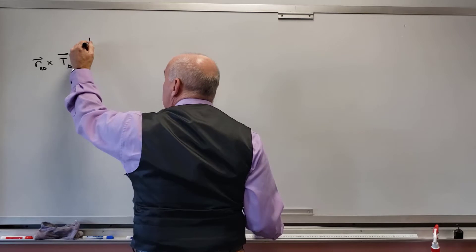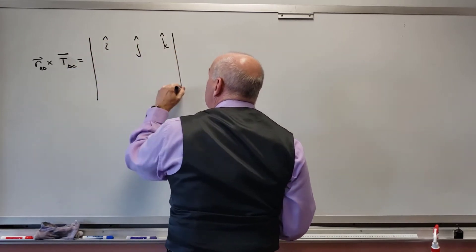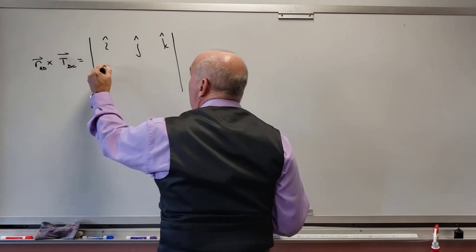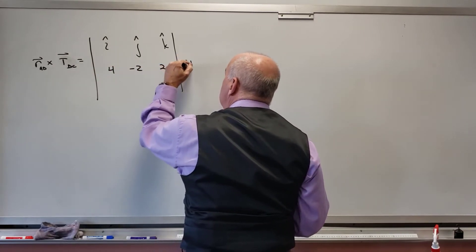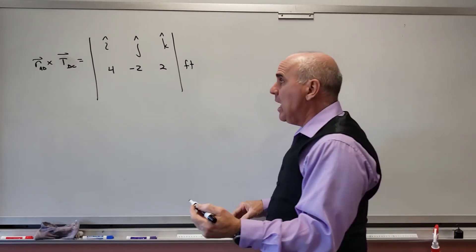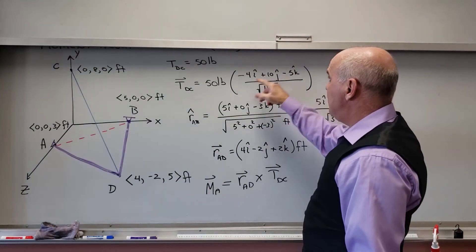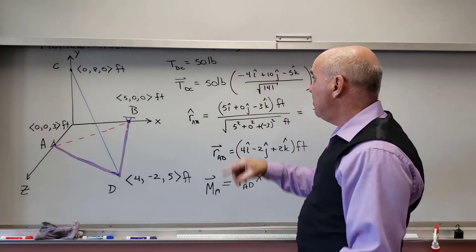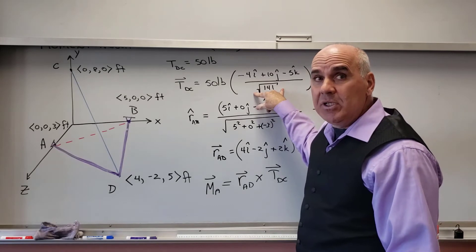So it's R_AD cross with T_DC. And so to do that, again, I need to determine it: i hat, j hat, k hat. So I do that. And then what's R? Well, R was (4,-2,2), and that's feet. So I'm going to put that outside of the determinant. And then when I look at this vector for the tension, I'm only going to put -4, 10, and -5 in the determinant.